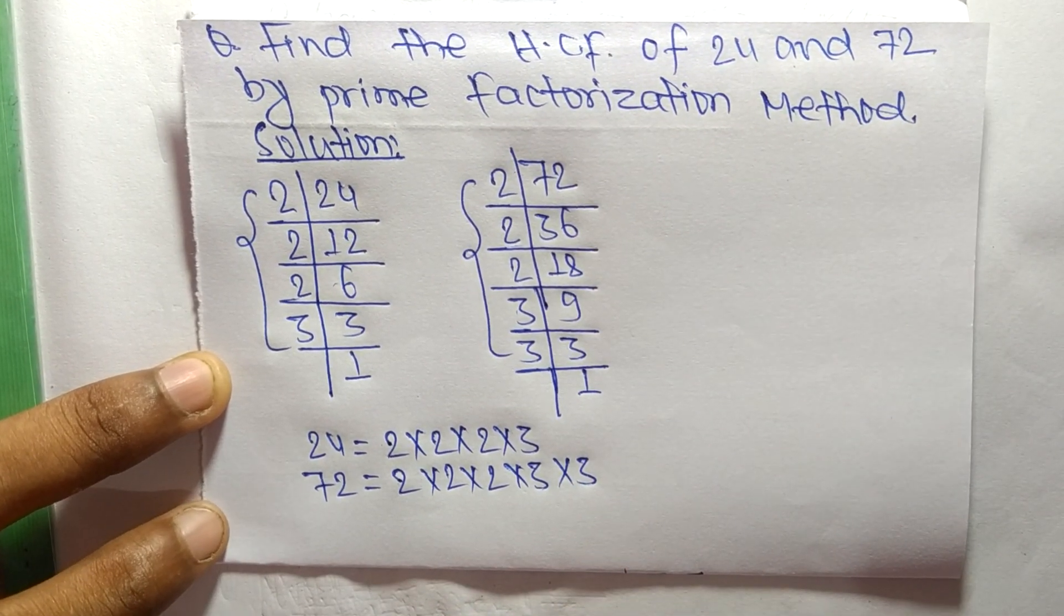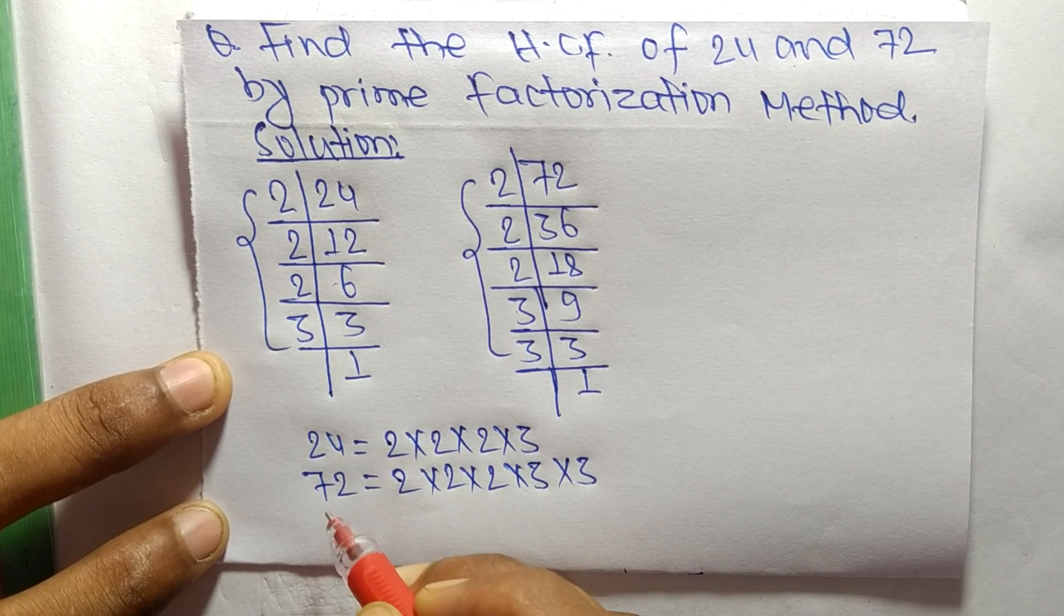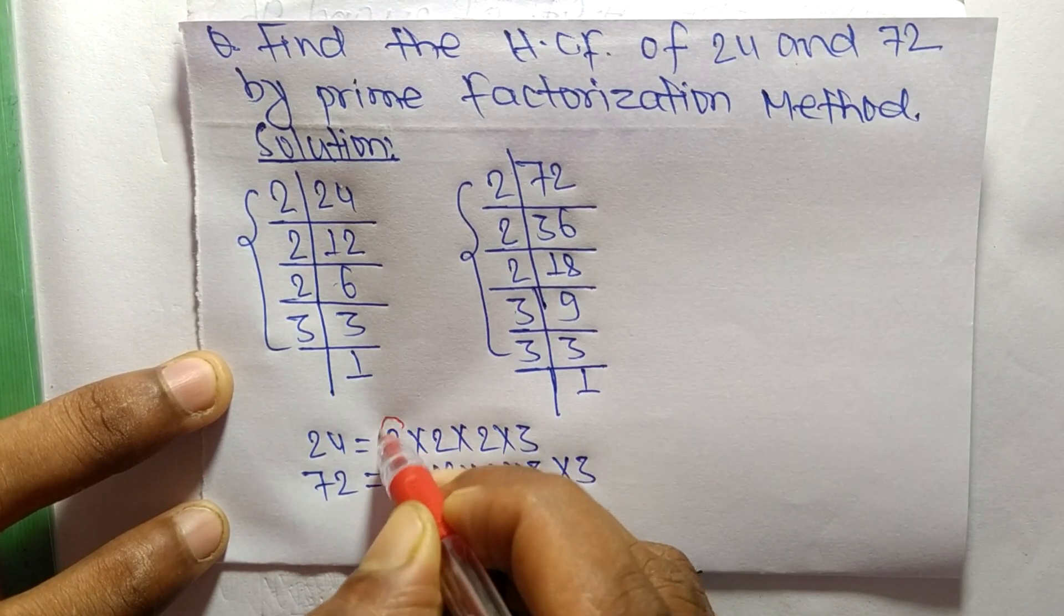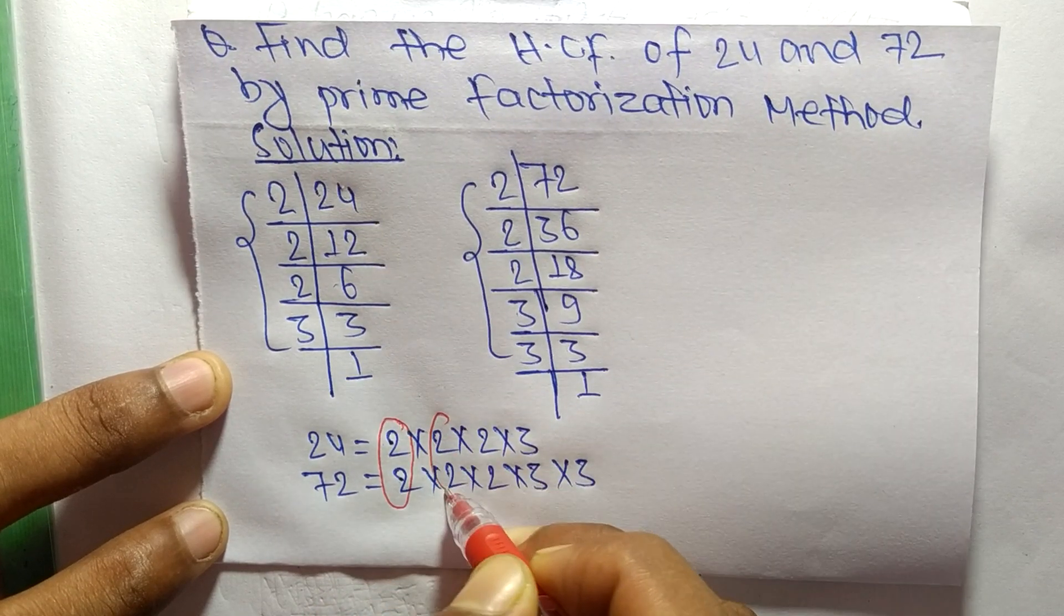Now we find the common factors in the prime factors of 24 and 72. The common factors are: 2, 2, 2, and 3.